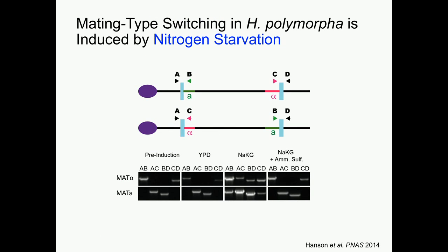Once we determined how this mechanism worked, we wanted to start understanding how it's regulated. The first thing I wanted to know was whether it's an active process or a passive one — is it inducible, or does it just happen when stochastic recombination events occur in these inverted repeat sequences? I looked for conditions that might induce this process and found that nitrogen starvation is a key signal to induce it.